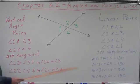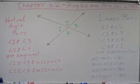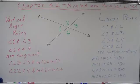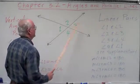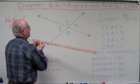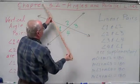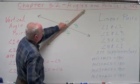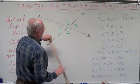Let's review what linear pairs are. Linear pairs are two adjacent angles that are supplementary, or two adjacent angles that make a straight line. Out of these four angles: one and two are a linear pair — they make a straight line. Two and three are a linear pair. Three and four are a linear pair. And four and one are a linear pair — they all make a straight line.